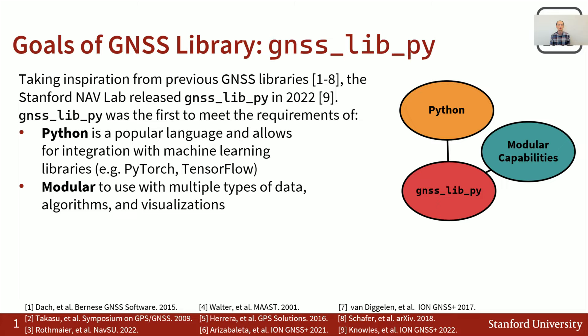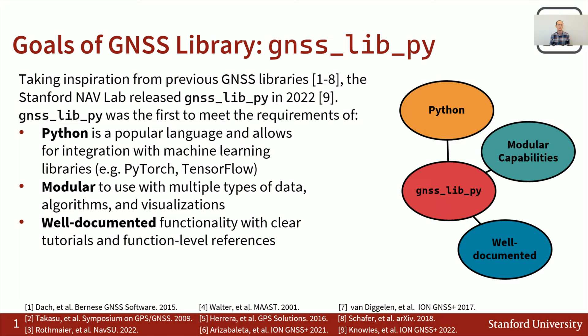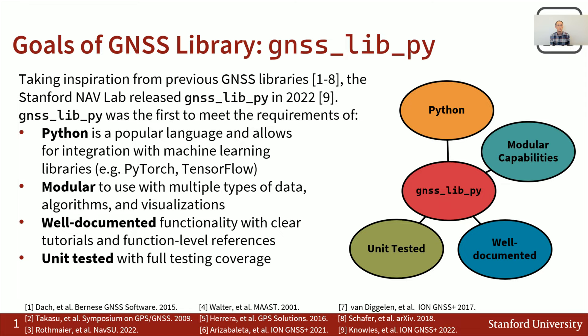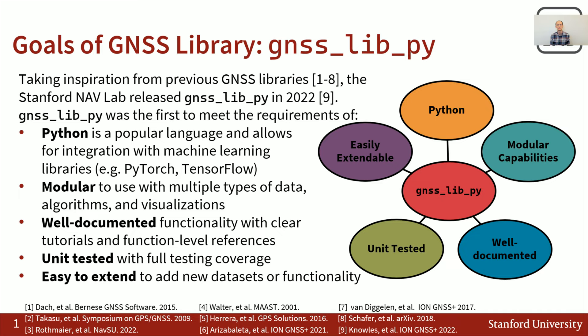It's also important that this library is modular, meaning we can integrate many different types of data and run the same algorithms and visualization tools. The library is well documented with function-level references for every function and citations where algorithms come from. It's fully unit tested with complete coverage so users can have confidence the library will continue to work as expected. Finally, the library is easily extendable with contribution guides, and this extensibility was tested over the past year as we implemented new functionality.